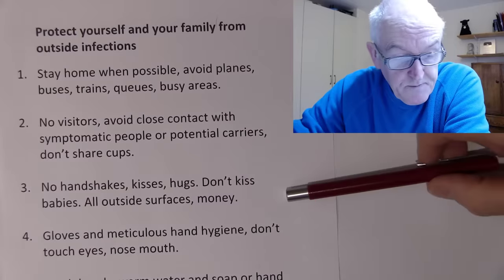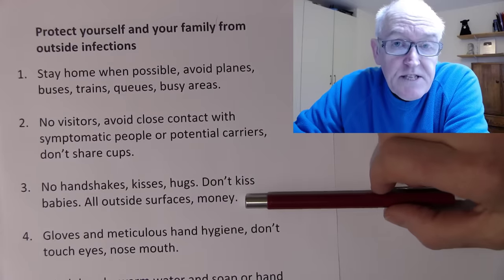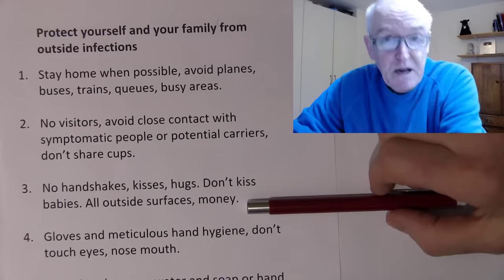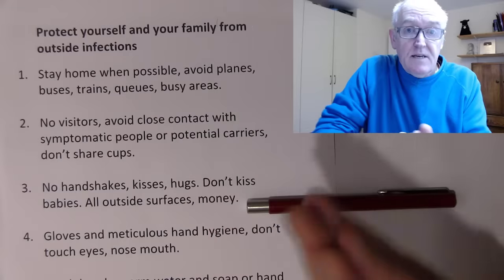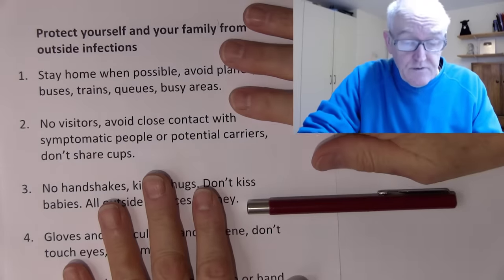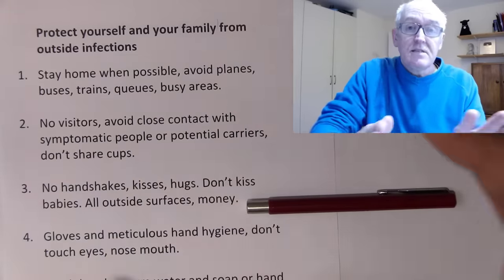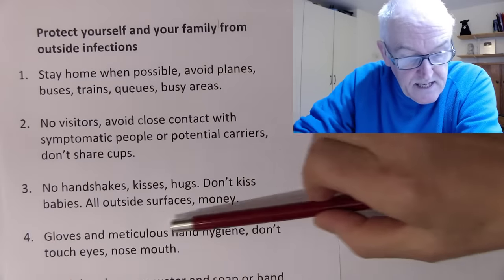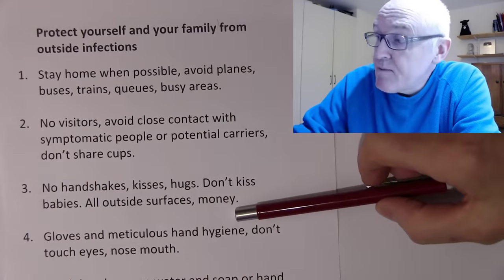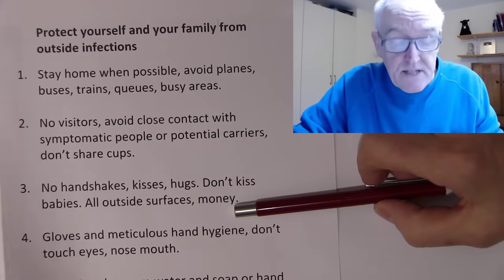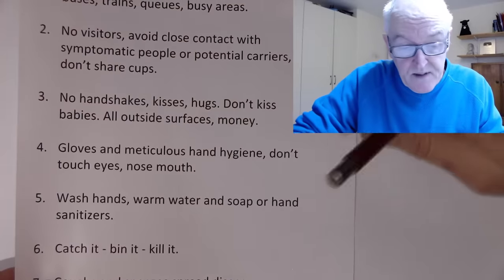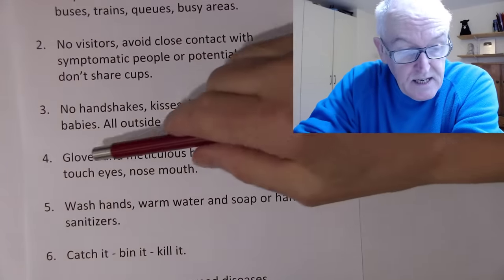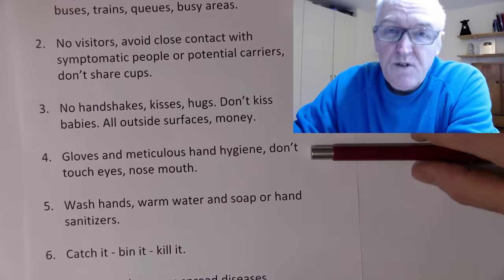Don't kiss babies. Outside surfaces should be considered contaminated during an epidemic — people breathe the virus out, you touch a surface such as money or any outside surface, it goes from the surface to your hands and into you. This is why meticulous hand hygiene is important. Wash your hands — meticulous hand hygiene — and don't touch your eyes or mouth with your hands.